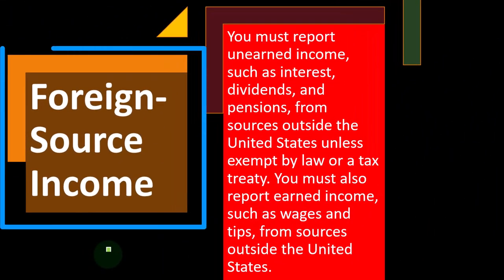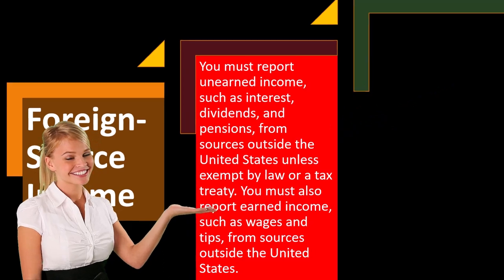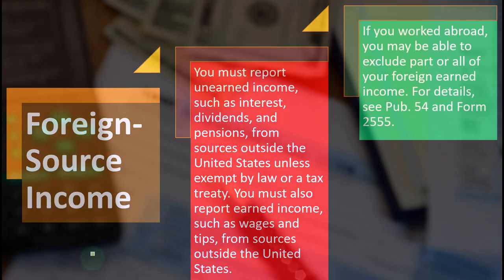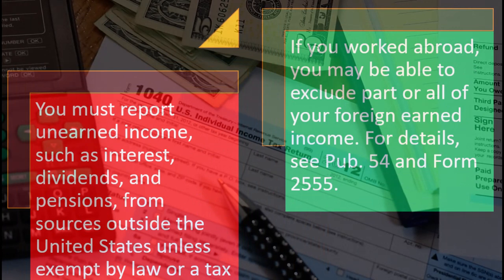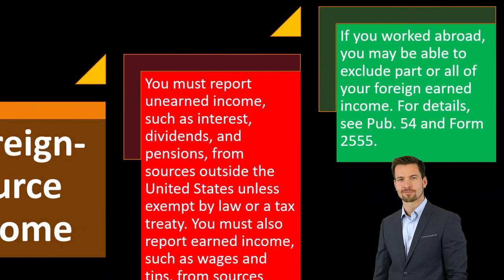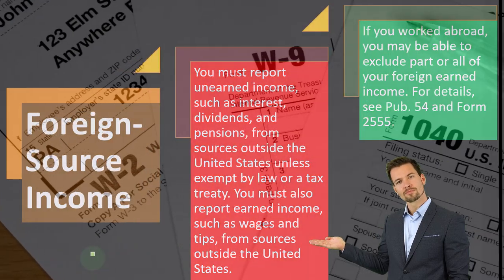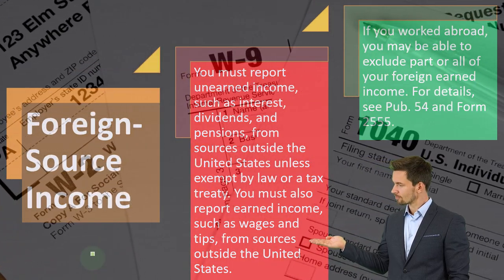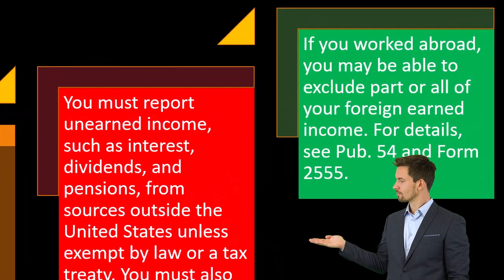Foreign source income: you must report unearned income such as interest, dividends, and pensions from sources outside the United States, unless exempt by law or a tax treaty. You must also report earned income such as wages and tips from sources outside the United States. If you worked abroad, you may be able to exclude part or all of your foreign income. For details, see Publication 54 and Form 2555 and its instructions.